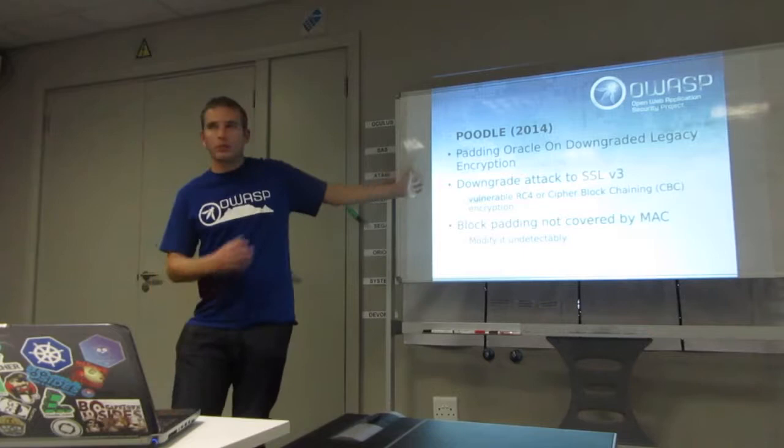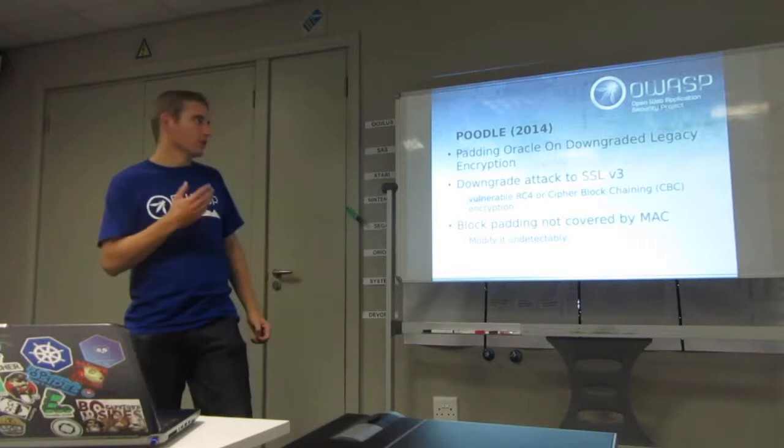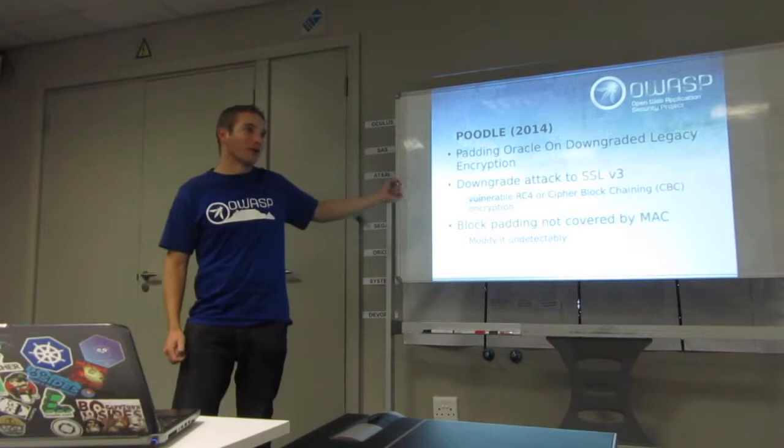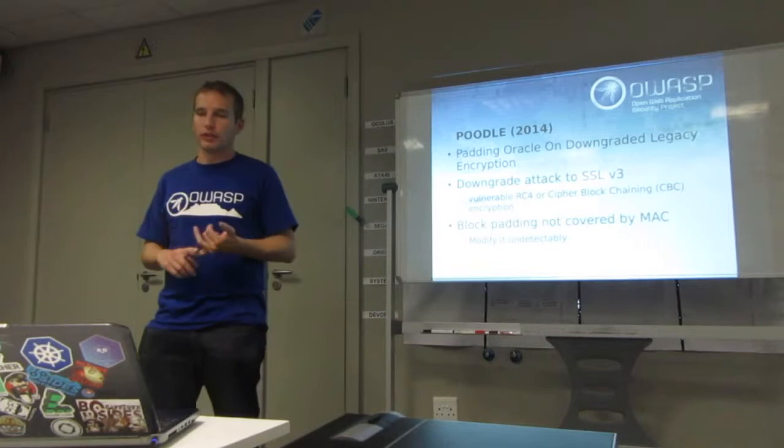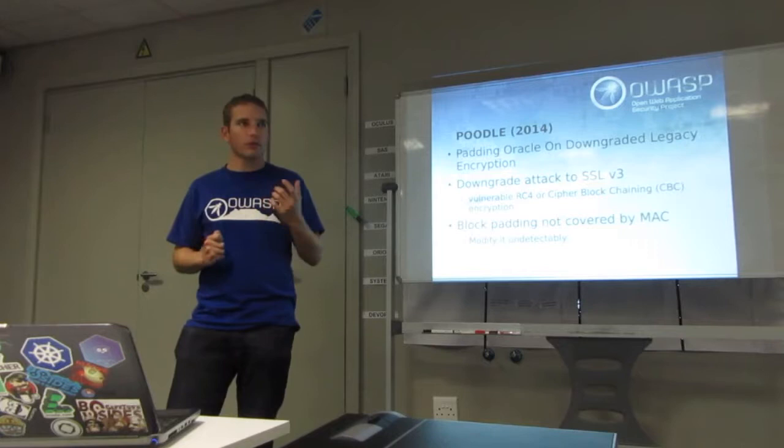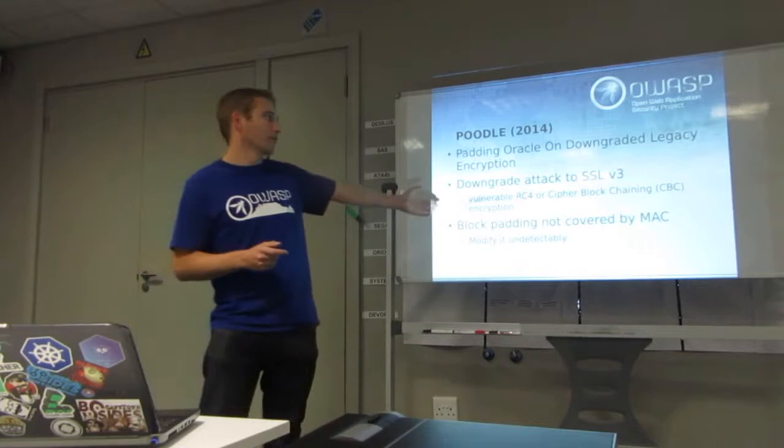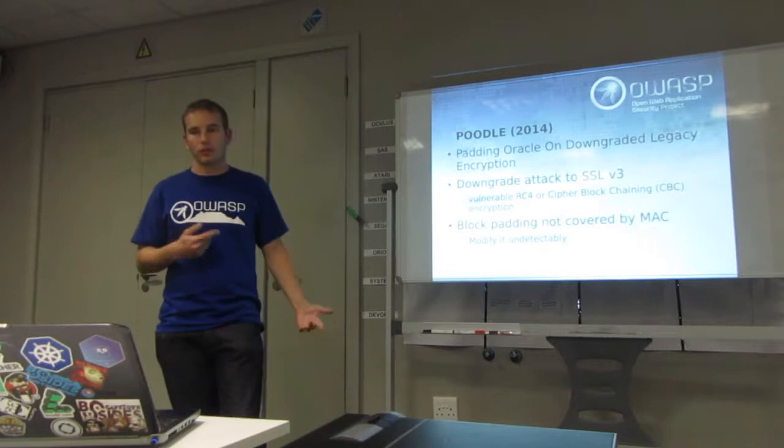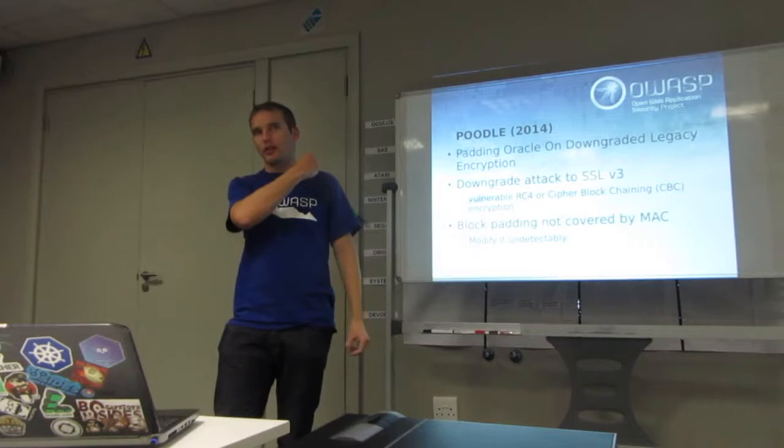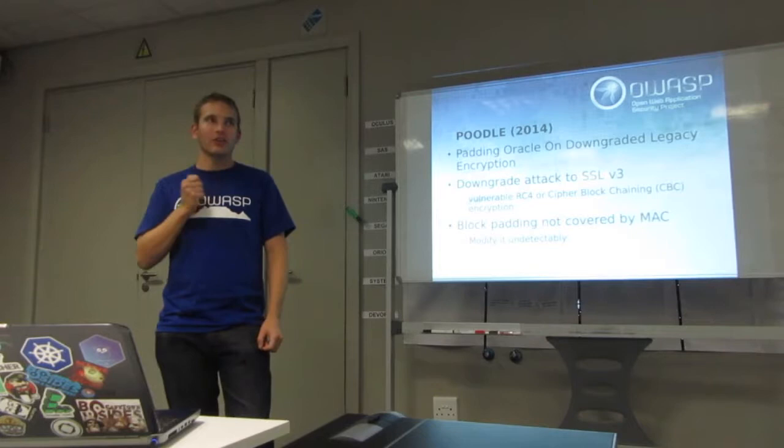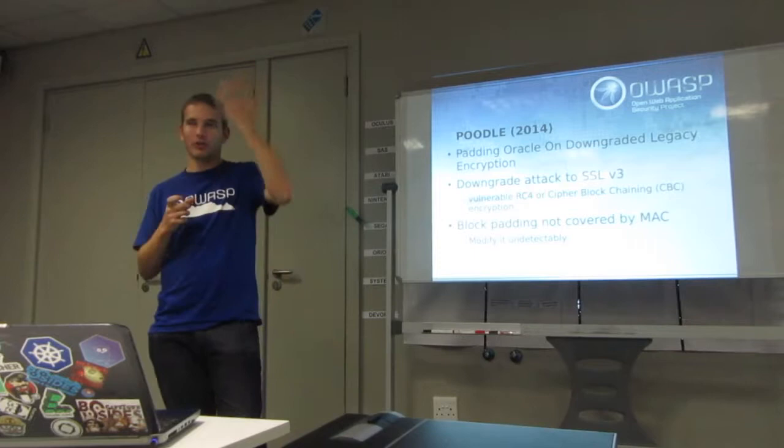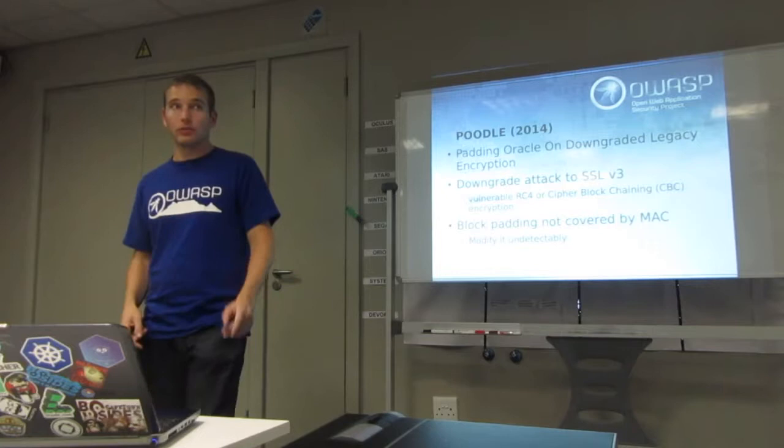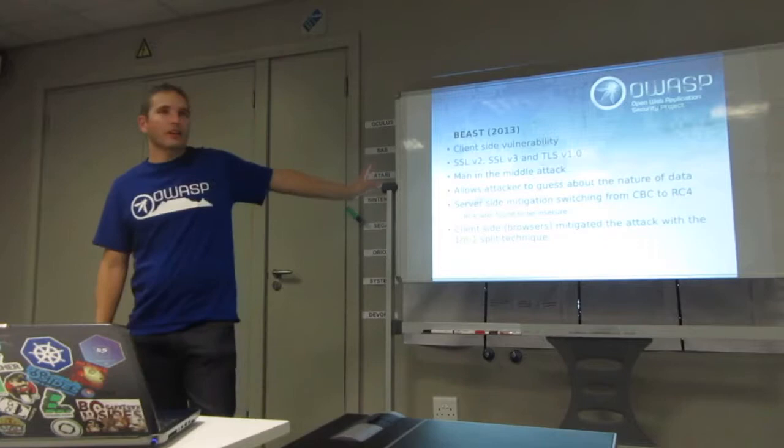POODLE. Some of these are I put here because I've encountered them and had to deal with them in the cleanup, and some of them because they seem more applicable. Just the name again. Basically it's a downgrade attack to SSLv3, and we'll talk about SSLv3 in a bit more. Vulnerable RC4 or the cipher block chaining encryption available in SSLv3, and basically that was just weak and vulnerable to decryption, hence vulnerable. The block padding was not covered by the MAC. Remember I mentioned the MAC right at the beginning? So that means you can start fiddling with the padding. And guess what? It's not actually part of the hash, which when decrypted you can take the hash and compare it to the message. So you can fiddle with that and nobody even knows you're fiddling with it. That's bad.